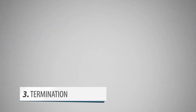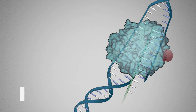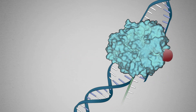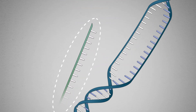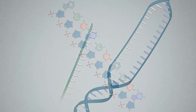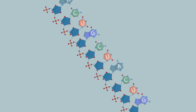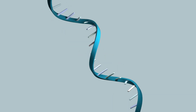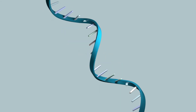In the last stage, termination, uracil triphosphate (UTP) is added to the RNA. The polymerase halts and releases both the newly created RNA chain and the DNA template. The final product of the transcription process is a mature messenger RNA chain that will serve as a template for the manufacture of proteins during translation.